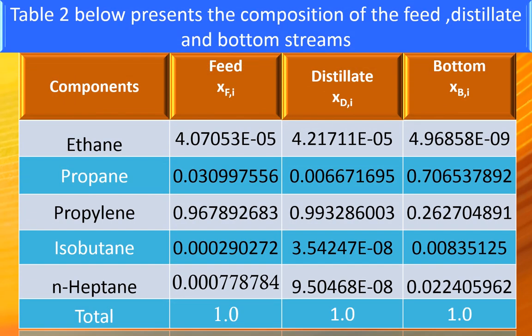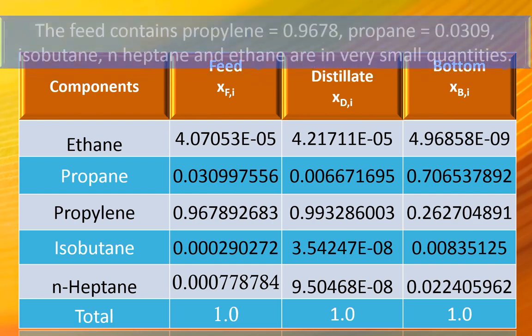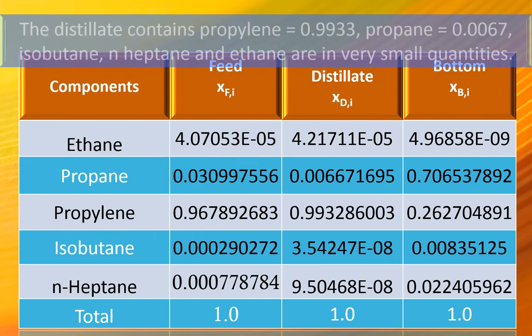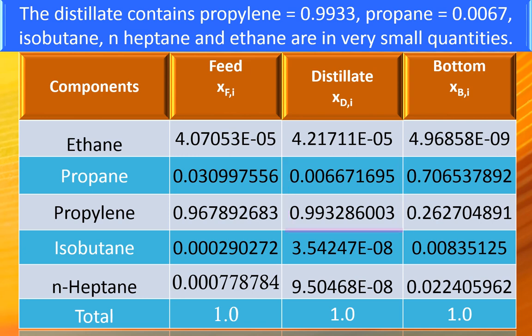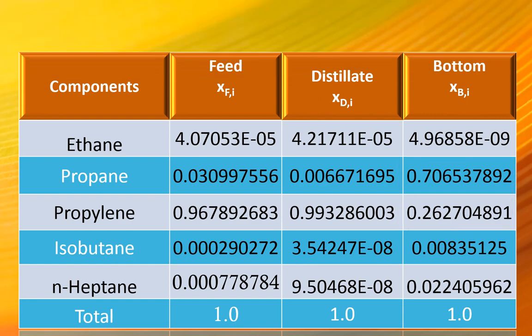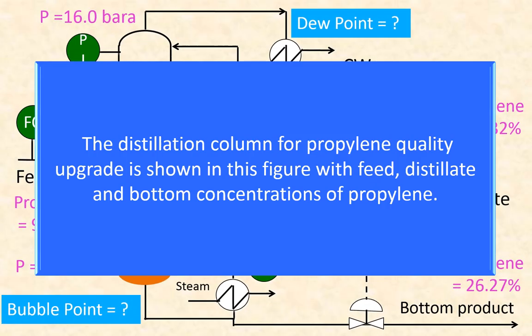Table 2 presents the composition of the feed, distillate, and bottom streams. The feed stream contains propylene 0.9678 and propane 0.0309; isobutane, n-heptane, and ethane are in very small quantities. The distillate contains propylene 0.9938 and propane 0.0067; isobutane, n-heptane, and ethane are in very small quantities. The bottom contains propylene 0.02627 and propane 0.07066; isobutane, n-heptane, and ethane are in very small quantities. The distillation column for propylene quality upgrade is shown in the figure with feed, distillate, and bottom concentrations of propylene.